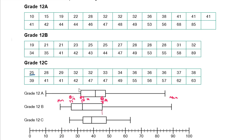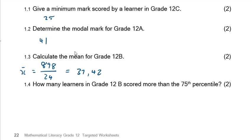Going down the number line to the 75th percentile, you can see it's at 40, 42, 44, 46 — so the 75th percentile value is at 46. Going back to the 12b table, the question is asking how many learners scored more than 46. Counting those: one, two, three, four, five, six learners. So six learners scored more than the 75th percentile.